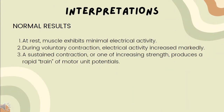Interpretations for normal results: We can say that the patient is healthy if we observe the following. At rest, muscle exhibits minimal electrical activity. During voluntary contraction, electrical activity increases markedly. A sustained contraction or one of increasing strength produces a rapid train of motor unit potentials.